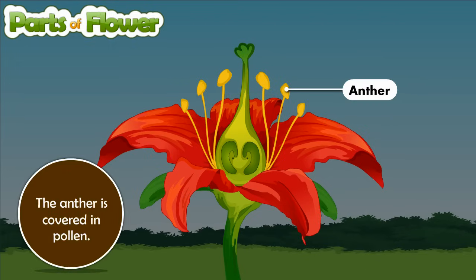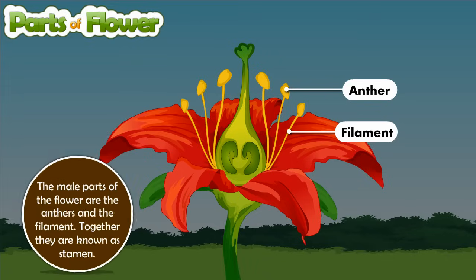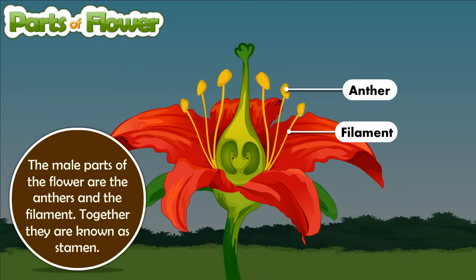The anther is covered in pollen. The male parts of the flower are the anthers and the filament. Together they are known as the stamen.